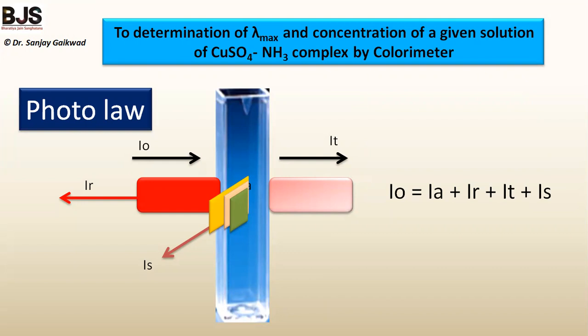Before starting this experiment we have to learn or revise some photo laws. This is the cuvette and it contains a colored transparent solution. According to the photo law, when the intensity of incident light falls on a colored transparent solution, some part of the light gets reflected, some part gets transmitted, some part gets absorbed, and some part gets scattered.